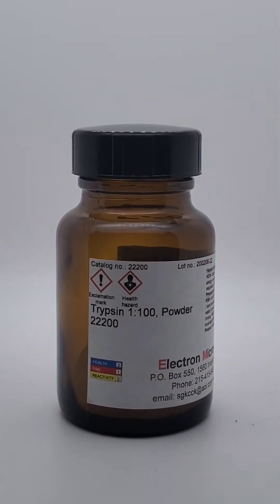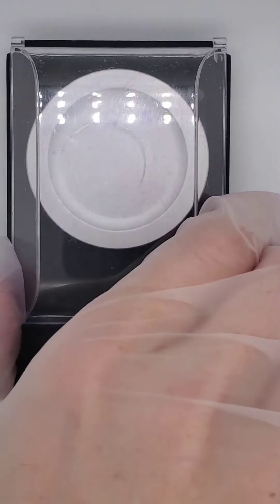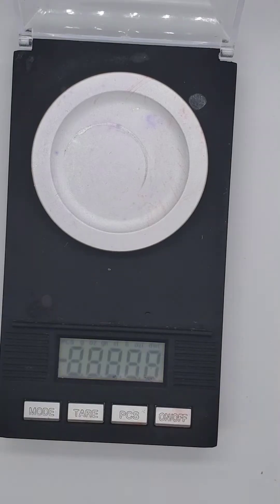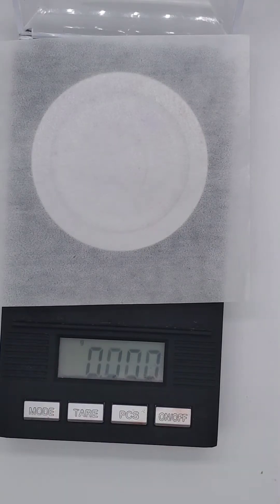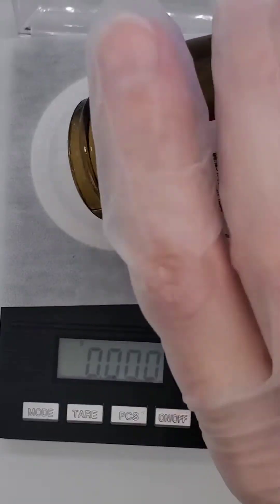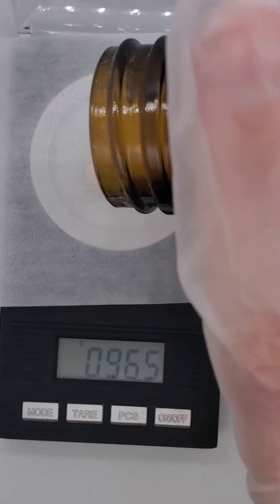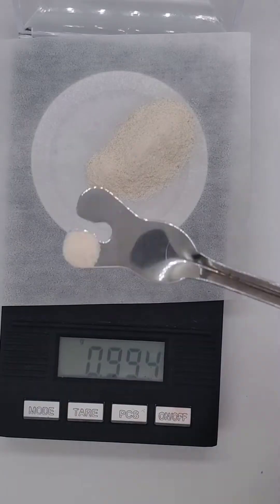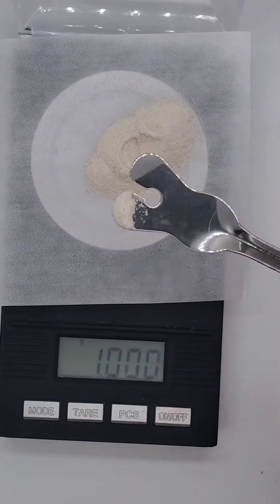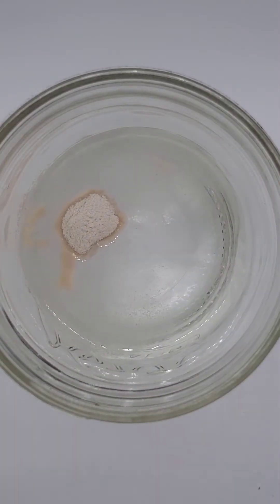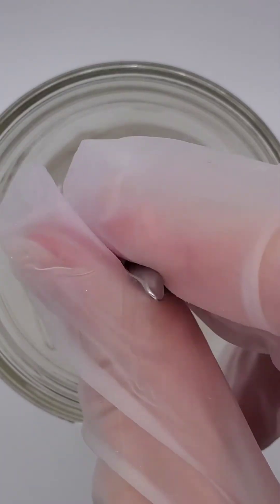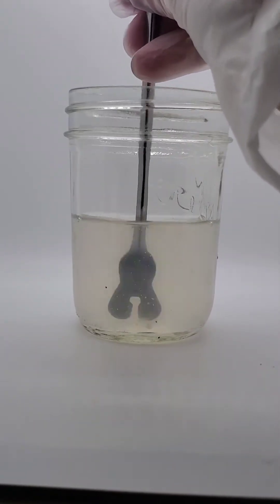And then you're gonna need one gram of trypsin powder. So let's measure that out. Okay, let's add that to the sodium borate and distilled water. Make sure to stir it up. I don't want it to be all clumpy.